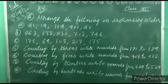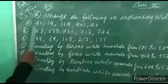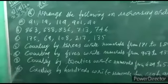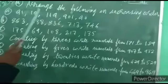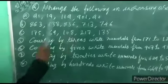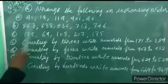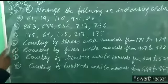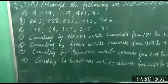Fourth question: arrange the following numbers in increasing order — 5 numbers are given, examples A, B, and C. Increasing means smallest to greatest — arrange and write from smallest going up.